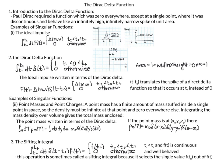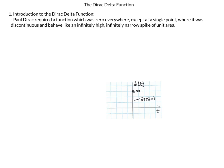Starting with the formal abstract mathematical definition: Paul Dirac required a function which was zero everywhere except at a single point. At that single point, where it was discontinuous, it behaves like an infinitely high, infinitely narrow spike of unit area. It's a curious definition, but this is how we define the Dirac Delta function.